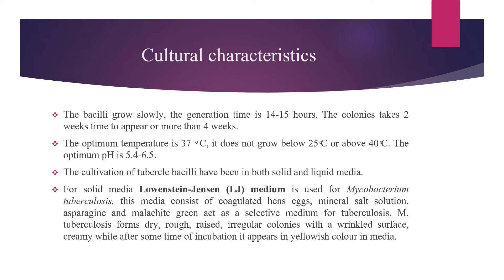Cultural Characteristics. The bacilli grows slowly; mostly the generation time is 14 to 15 hours. The colonies take 2 weeks or more than 4 weeks to appear. The optimum temperature is 37 degrees Celsius; it does not grow below 25 and above 40 degrees Celsius. The optimum pH is 4.5 to 6.5. Cultivation of tuberculobacilli uses both solid and liquid medium. The solid medium is Loewenstein-Jensen (LJ) medium, which consists of coagulated hen's egg, mineral salt solution, asparagine, and malachite green acting as a selective medium. The tuberculosis forms dry, rough, raised, irregular colonies with a wrinkled surface, creamy white after incubation, appearing yellowish in color in media.